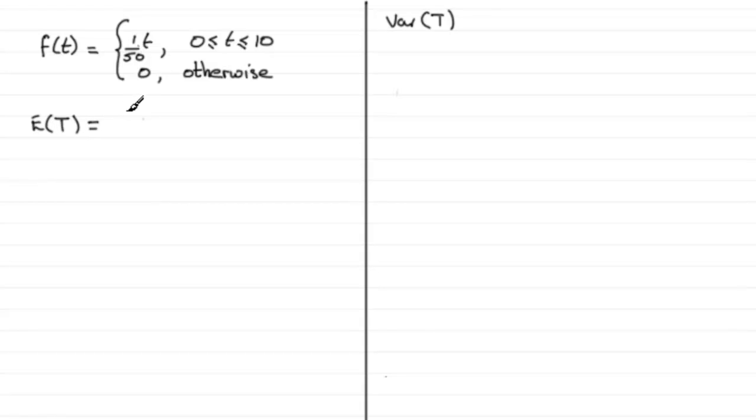E(T) is equal to the integral of t times the probability density function f(t), integrated with respect to t going between the limits 0 to 10. Normally we have this with x's in it.